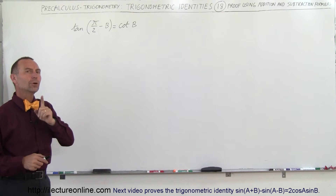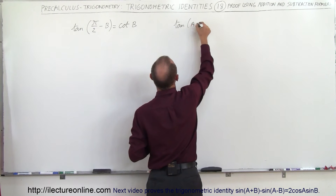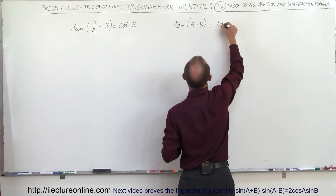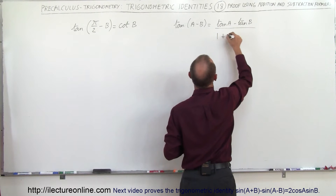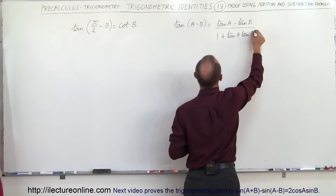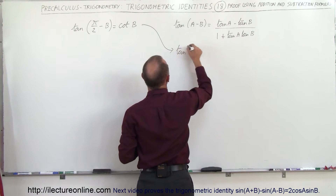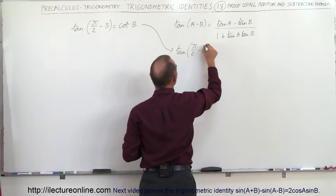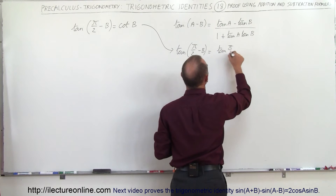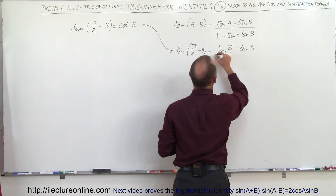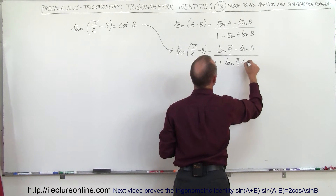Here we have the tangent of the difference of two angles, and I think I know a formula for that. The tangent of a minus b is equal to the tangent of a minus the tangent of b, divided by one plus the tangent of a times the tangent of b. So if a is π/2, I can say that the tangent of π/2 minus b can be written in the following way: the tangent of π/2 minus the tangent of b, divided by one plus the tangent of π/2 times the tangent of b.